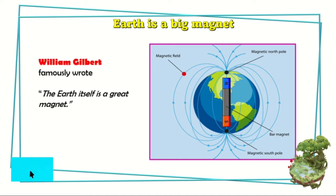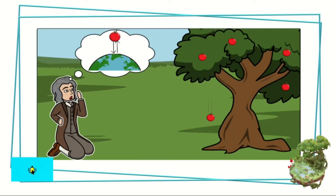The earth is a big magnet. According to Sir William Gilbert, he famously wrote that the earth itself is a great magnet. Our earth is a giant magnet because it has the power to pull things. The power of the earth to keep everything firmly on the ground is what we call gravity. Always remember, Grade 6: the reason behind why you are not floating is gravity.